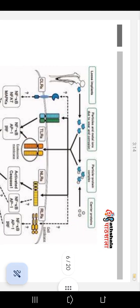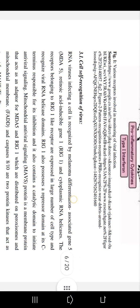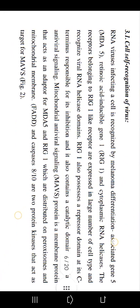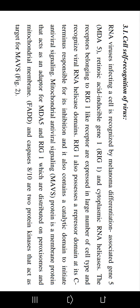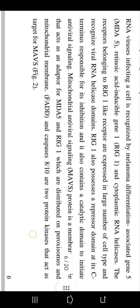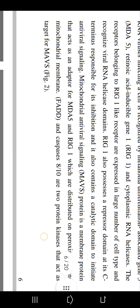This representation indicates the receptors involved in monitoring of viral infection and self-recognition of virus. RNA virus infecting a cell is recognized by RNA differentiation-associated gene 5 (MDA5), retinoic acid-inducible gene 1 (RIG-1), and cytoplasmic RNA helicase. Receptors belonging to the RIG-1-like receptor family are expressed in a large number of cell types and recognize viral RNA through helicase domains. RIG-1 also possesses a repressor domain responsible for its inhibition and contains a catalytic domain to initiate antiviral signaling.